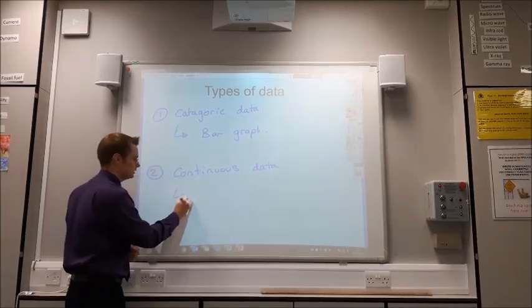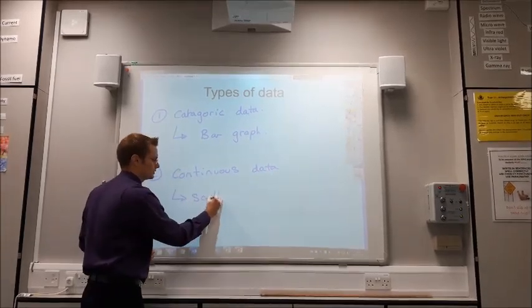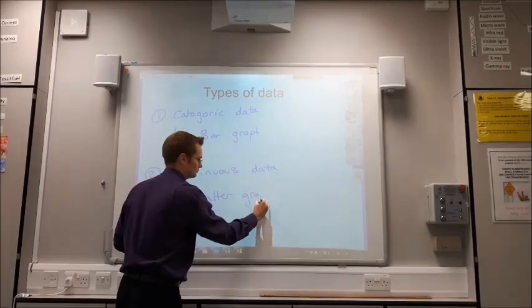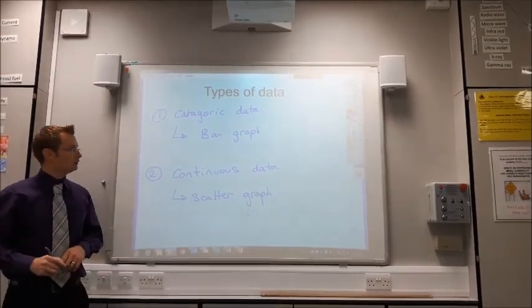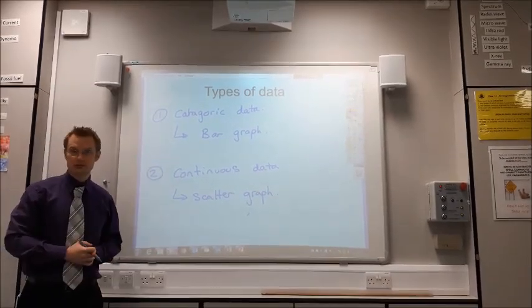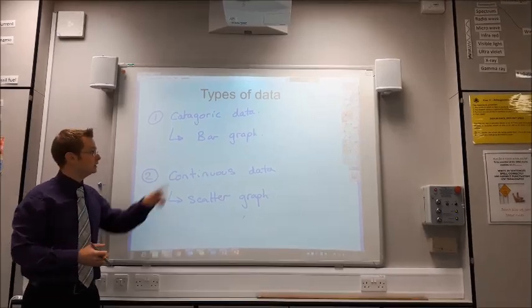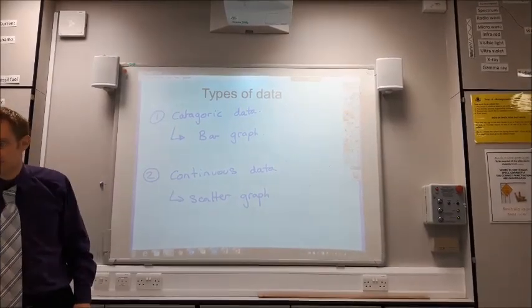When you have continuous data, you need to draw a scatter graph. So, they're the two types of data that we're going to look at in this video. But we are going to focus on drawing a bar graph for categoric data.